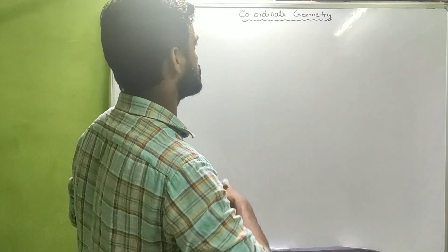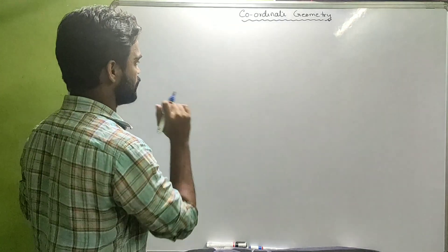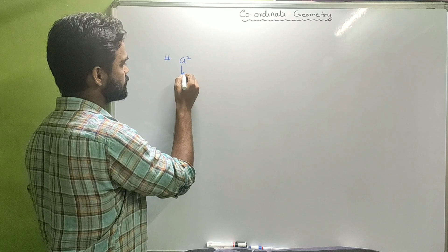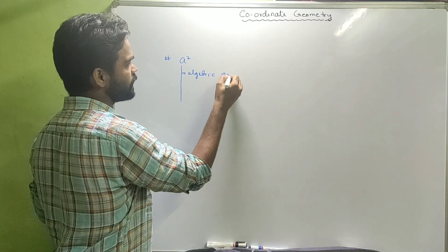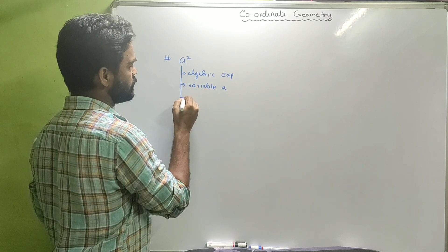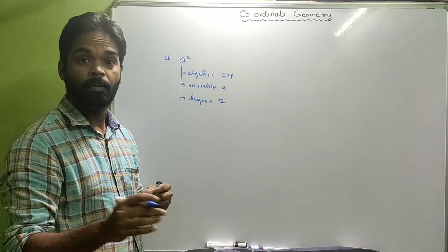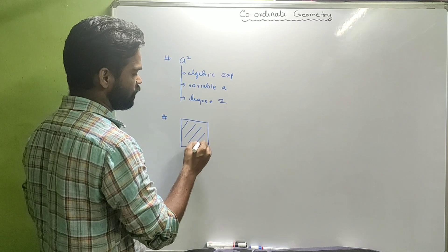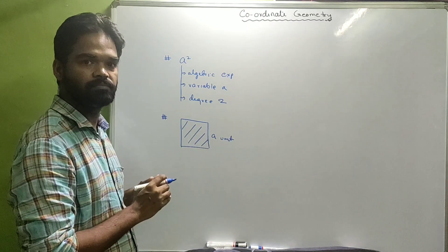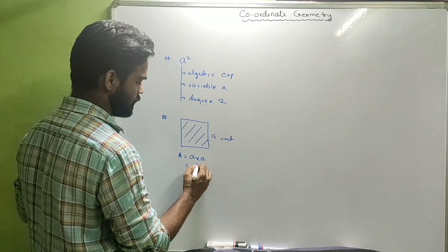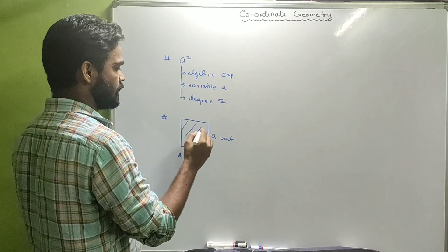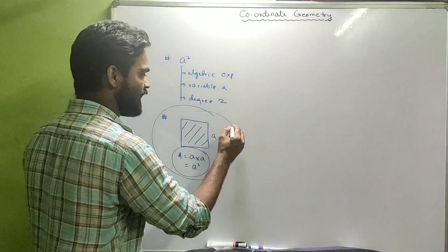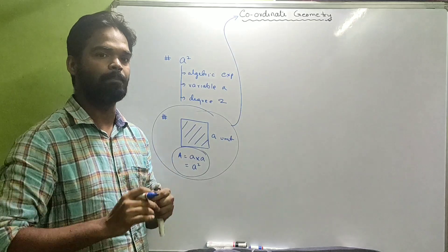Today our topic of discussion is coordinate geometry. Suppose I write 'a square' - one can see this is an algebraic expression with variable a and degree 2. But at the same time, 'a squared' represents the area of a square of side a units: a multiplied by a equals a squared. So we are representing geometry with the help of algebraic expressions - that is coordinate geometry.